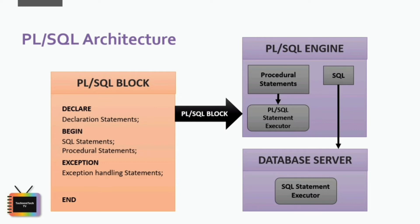The PL/SQL Block has a declarative section for declaring variables, an executing section for processing statements, and an exception handling section for handling errors. It also contains SQL instructions used to interact with the database server. All PL/SQL units are treated as PL/SQL blocks, and this serves as the primary input. There are different types of PL/SQL units like anonymous blocks, functions, libraries, procedures, package body, package specification, triggers, types, type bodies, etc., which we will learn about in upcoming tutorials.